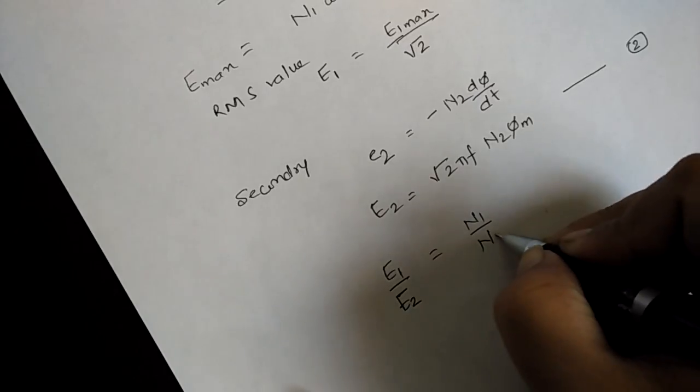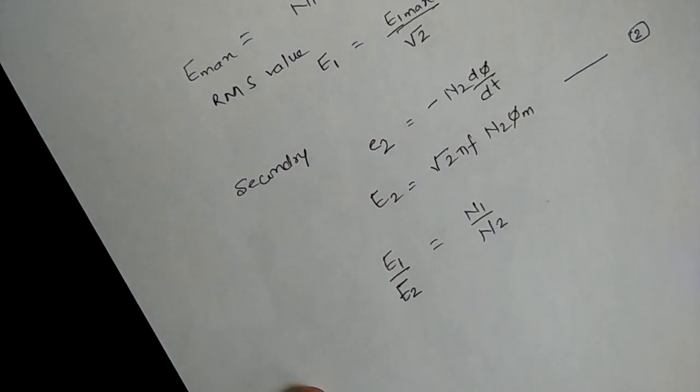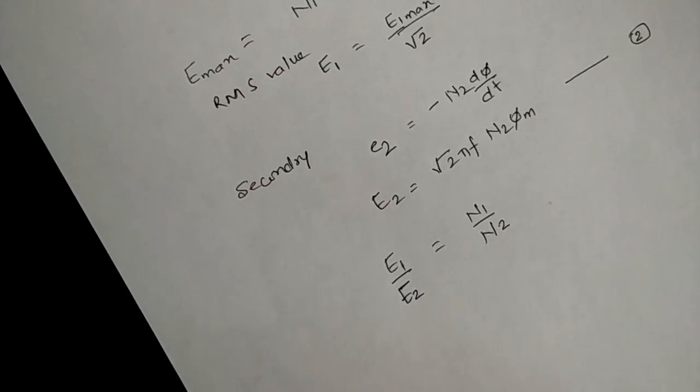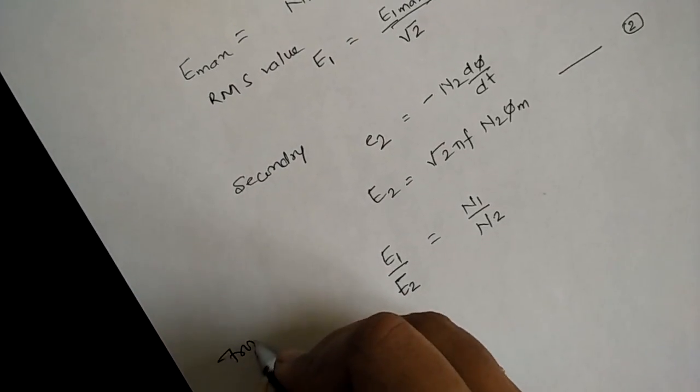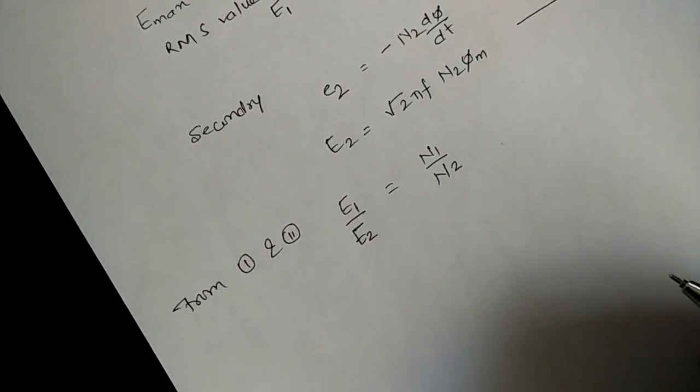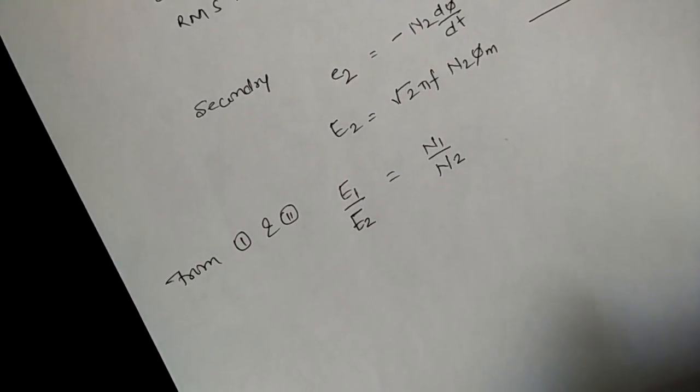Now from equation 1 and 2, you can see that e1 upon e2 is equal to n1 upon n2.